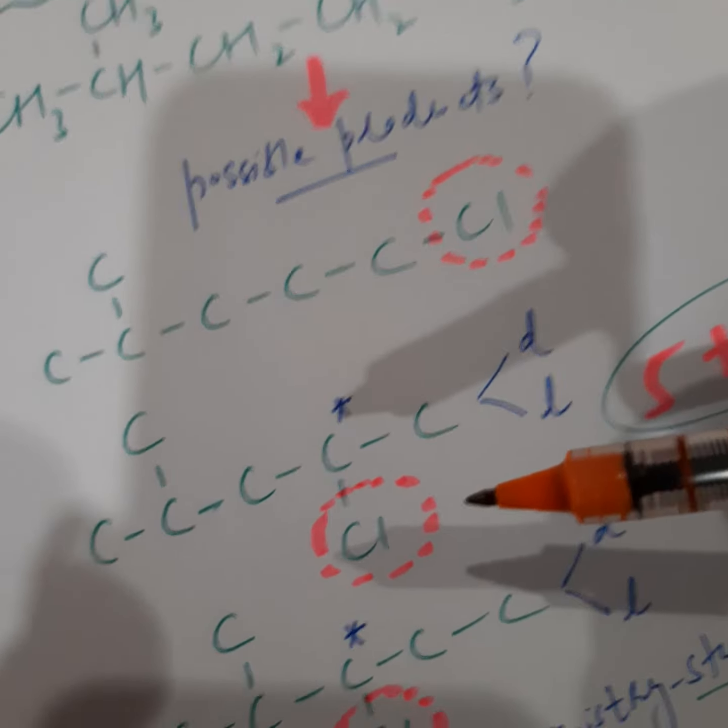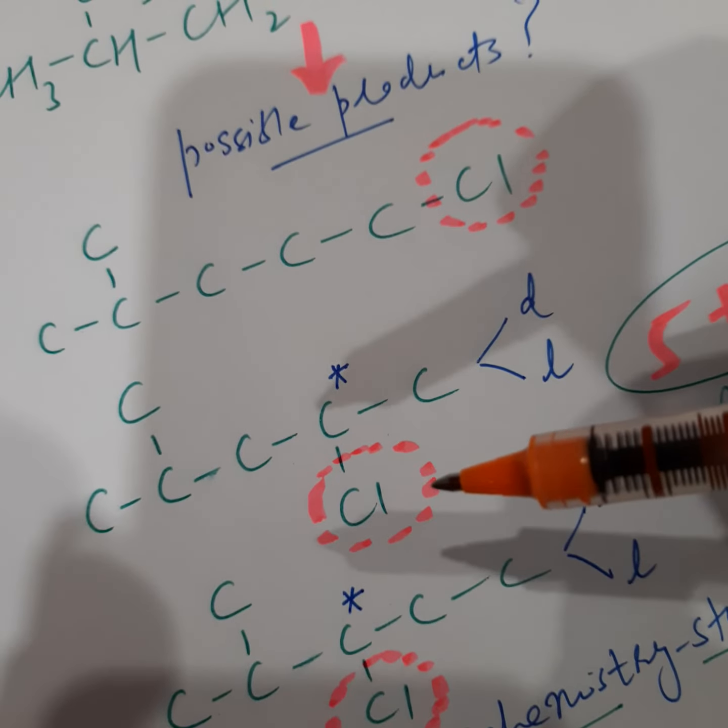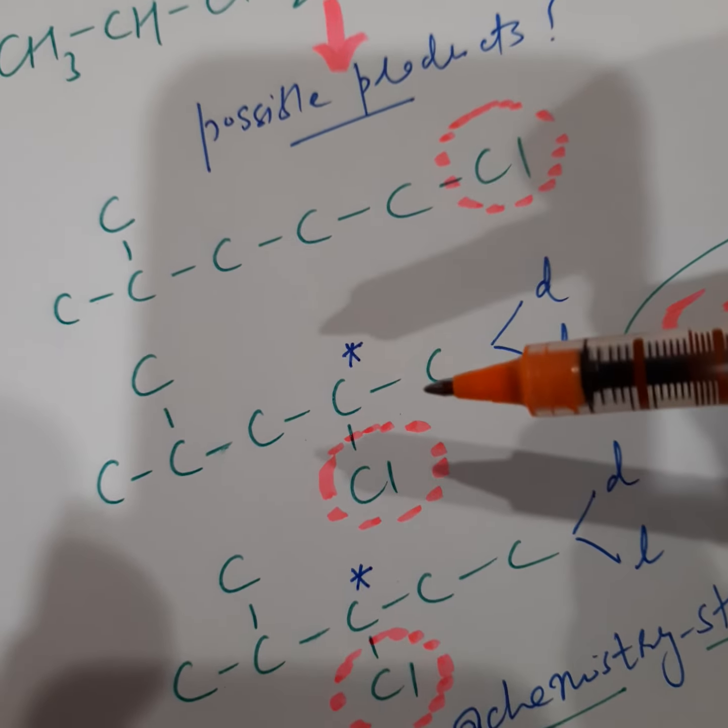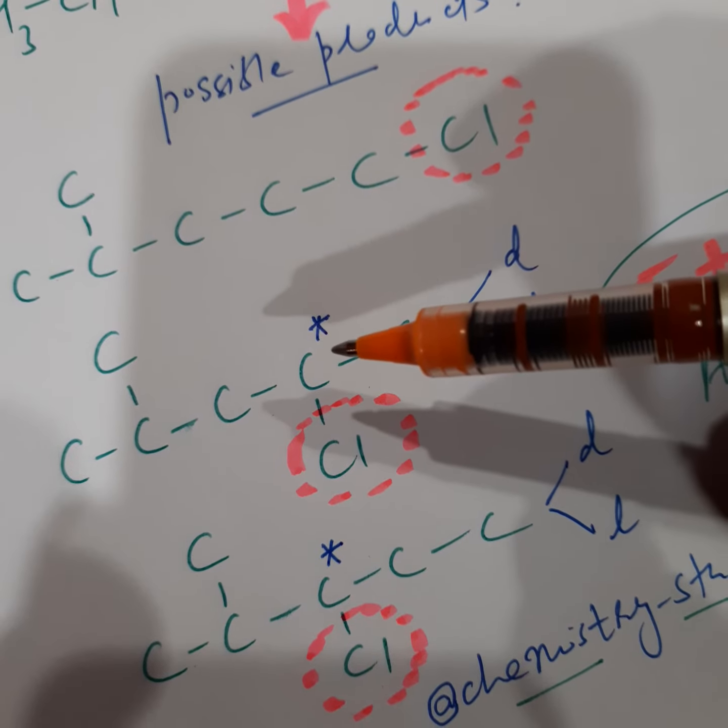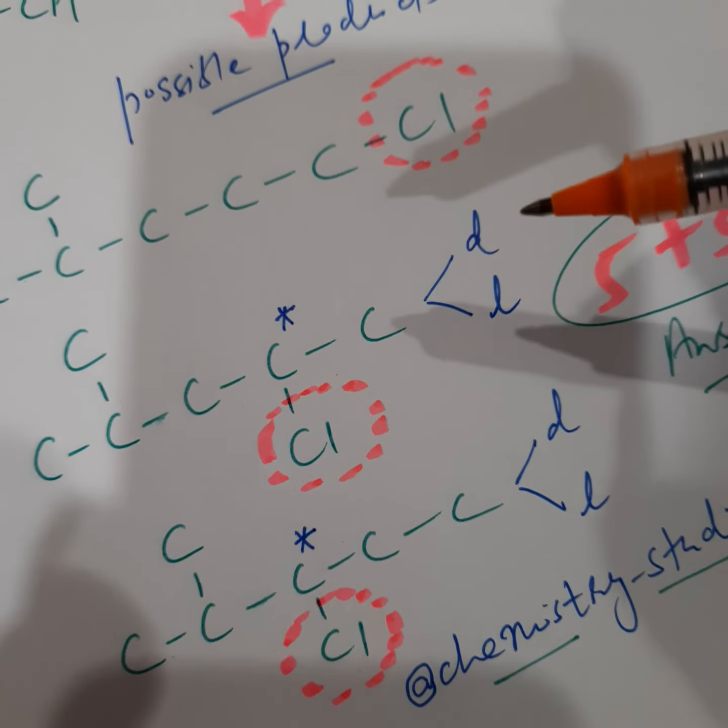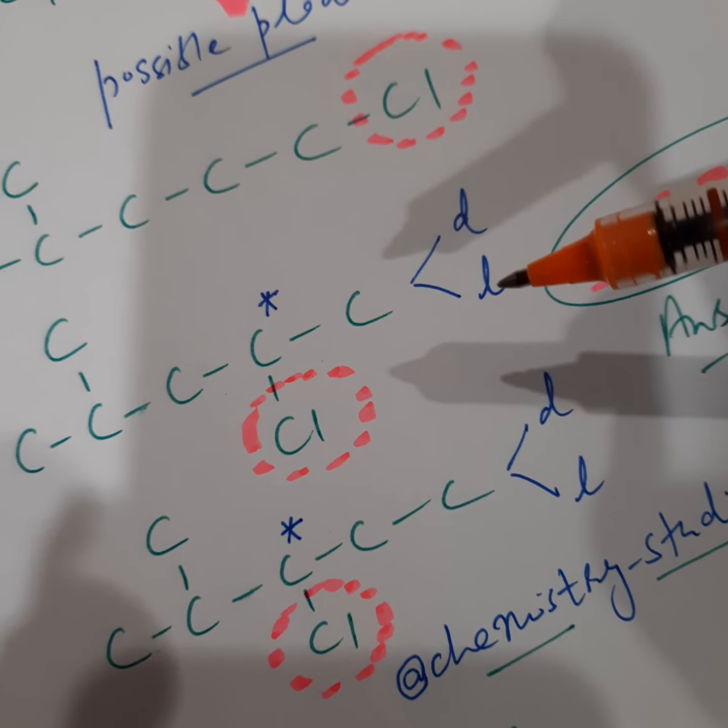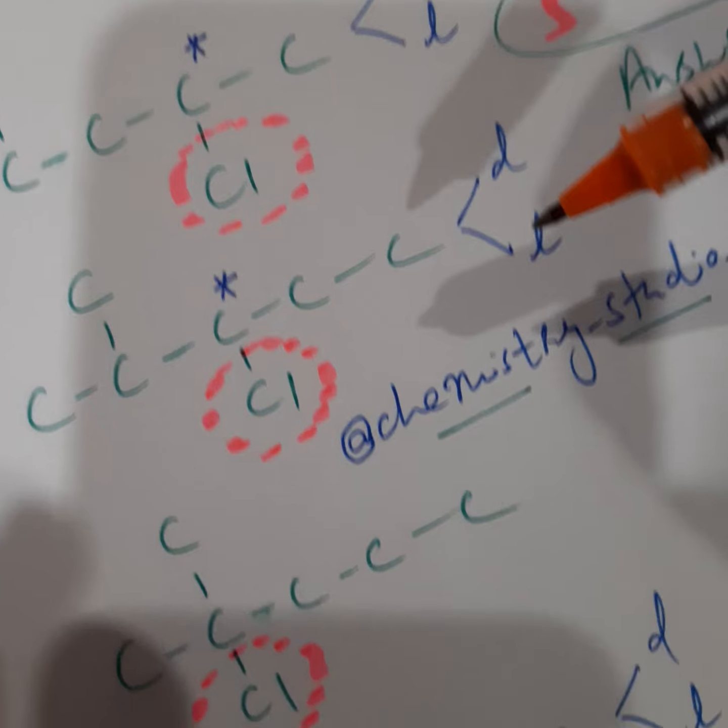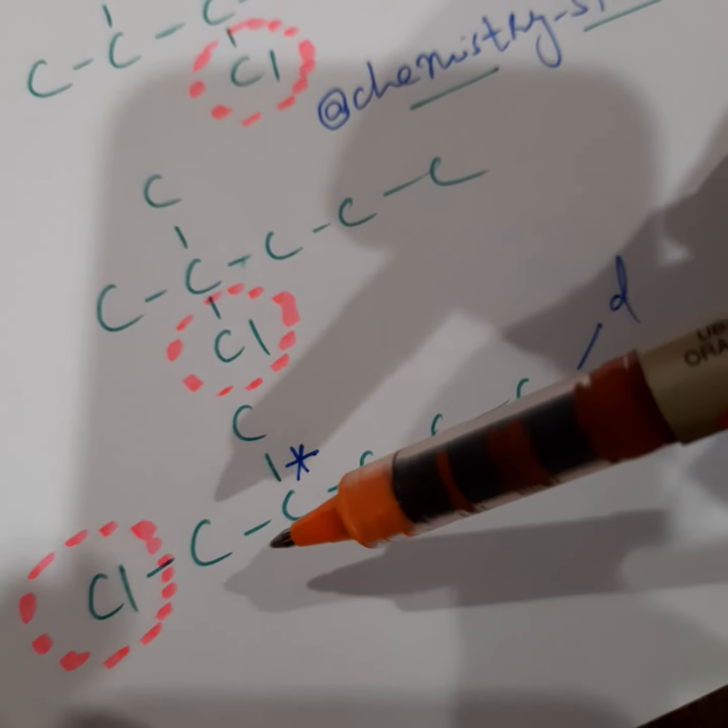Now for stereoisomers we have to consider how many are the chiral carbons out here. In the first product there is no chiral carbon atom. In the second product the carbon which is marked with the star is a chiral carbon atom. So it is going to occur in two forms dextrorotatory and levorotatory. This one again chiral carbon atom dextrorotatory and levorotatory and this one again.